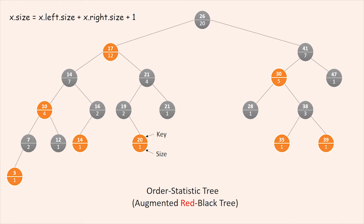For example, the tree in the figure has two keys with the value 14 and two keys with the value 21. In the presence of equal keys, the notion of rank is not well defined. We remove this ambiguity for an order statistic tree by defining the rank of an element as the position at which it would be printed in an inorder traversal of the tree. In the figure, for example, the key 14 stored in the black node has rank 5 and the key 14 stored in the red node has rank 6.